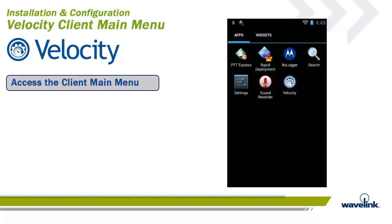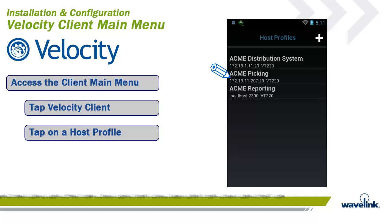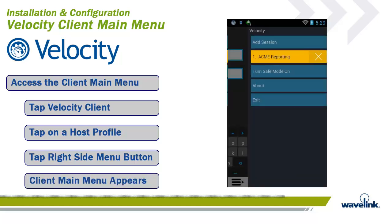The Velocity Client Main Menu drives many things when connected to a Velocity Session. The menu allows the users to connect to another session, shows the user which sessions are active, turns on and off Safe Mode, and is the quickest and easiest way to disconnect from a Velocity Client Session. To access the Client Menu from your mobile device, tap the Velocity icon to start the client, then tap on the Host Profile you want to execute. Once connected, on the bottom right-hand side of the screen, there is a Menu button. Tap that button and the Client Main Menu will appear.